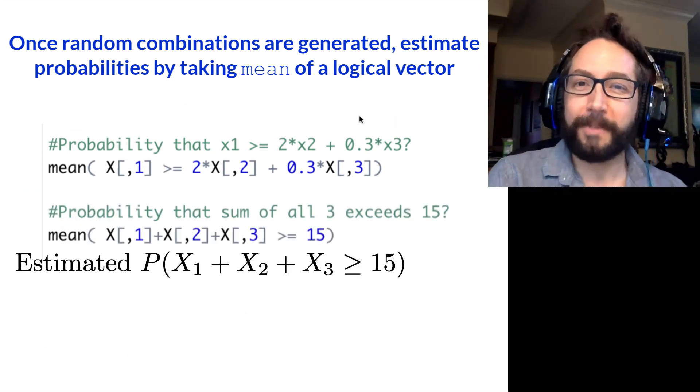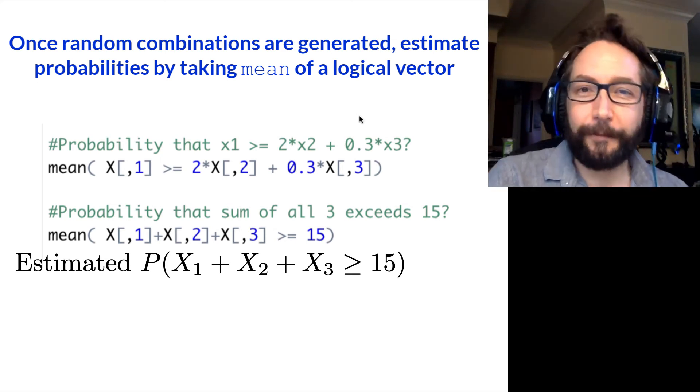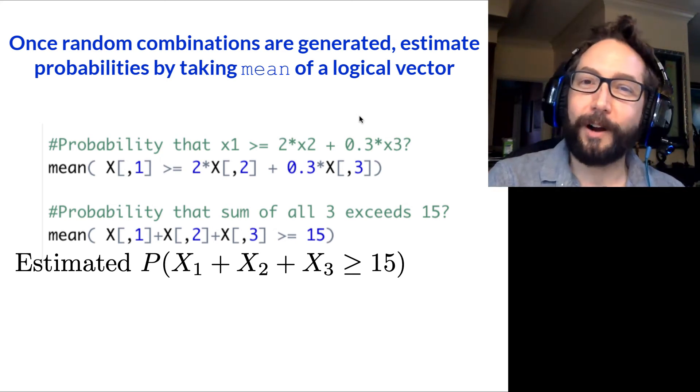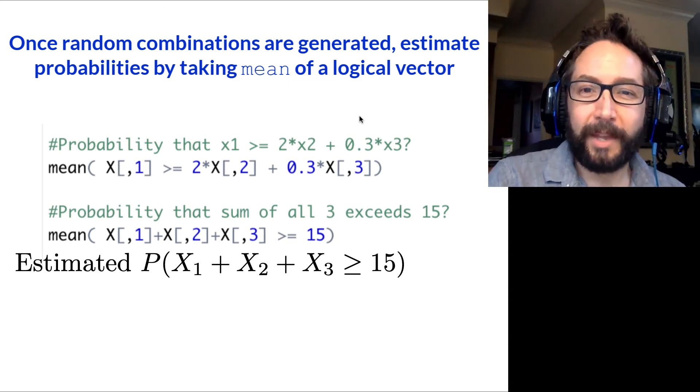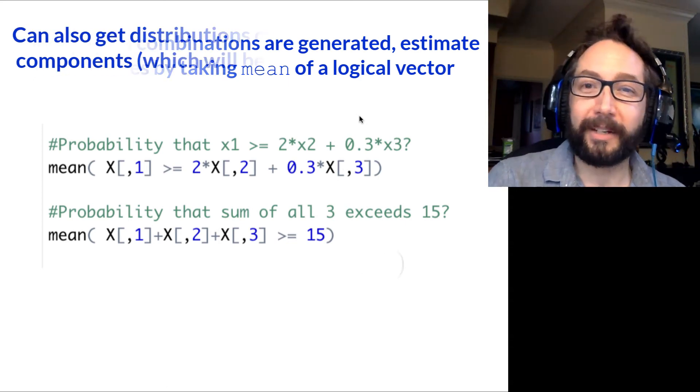Probability that all three sum together exceed 15, we'll take the first column plus second column plus third column greater than or equal to 15 as our logical condition, run it through, and we can find out what that probability is.